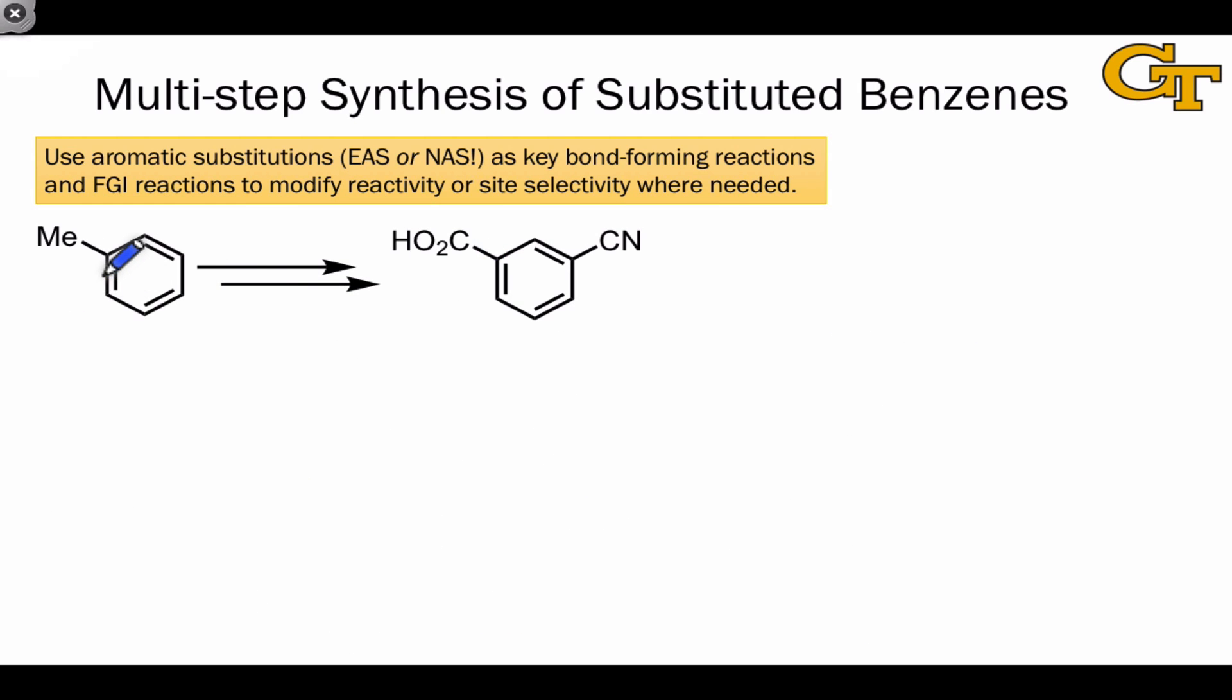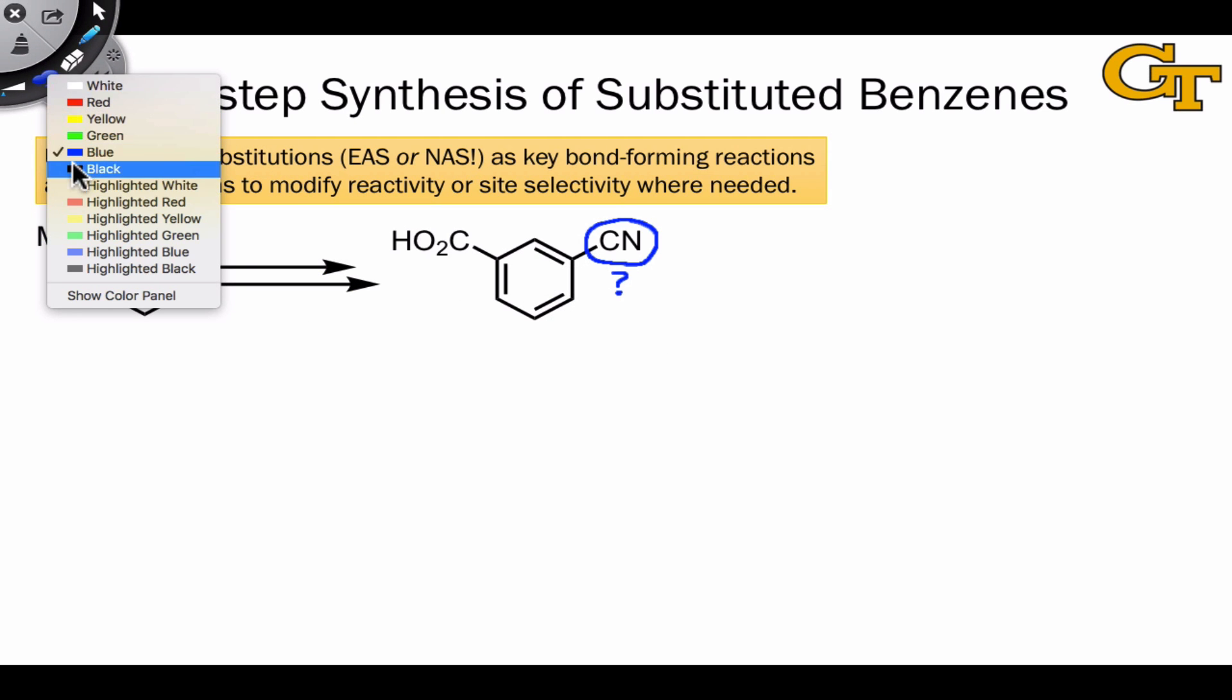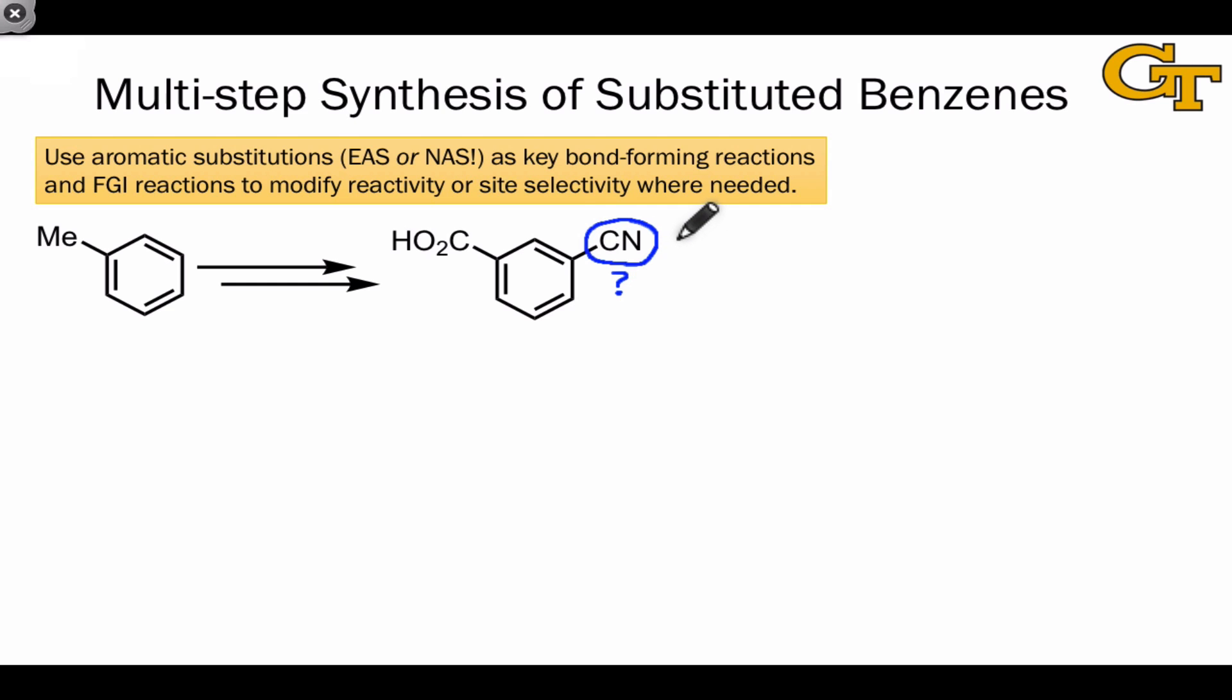The second example is somewhat more interesting. We're starting from toluene, but the target contains absolutely no methyl groups within it. We also see a substituent that looks unfamiliar from an electrophilic aromatic substitution perspective. How can we install the cyano group? Well, we're going to have to do it either by converting this methyl group into a cyano, which is a transformation we don't really know how to do, or by installing the cyano through some kind of substitution reaction, likely nucleophilic aromatic substitution, since cyanide anion is a pretty good nucleophile.